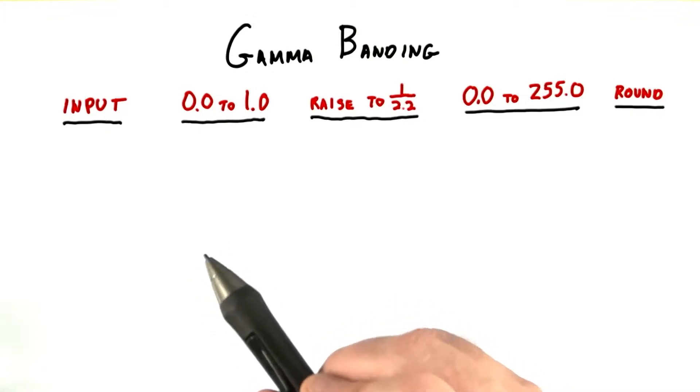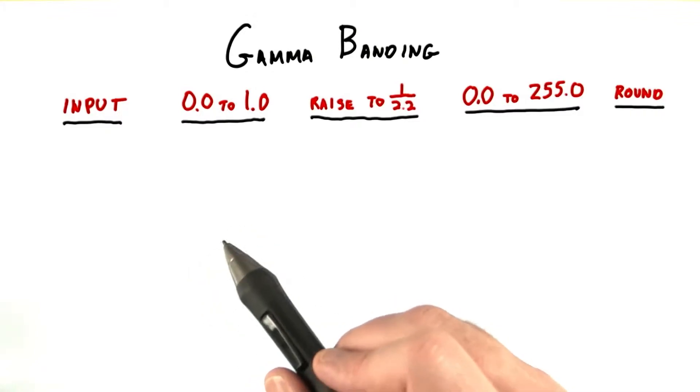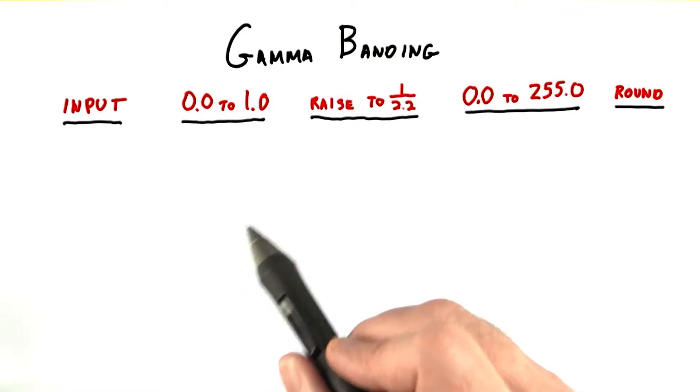In theory, you could take an output image and use gamma correction on it as a post-process. I mentioned that there's a problem with trying to gamma correct if you have just 8 bits per channel. Let's put a number on it.